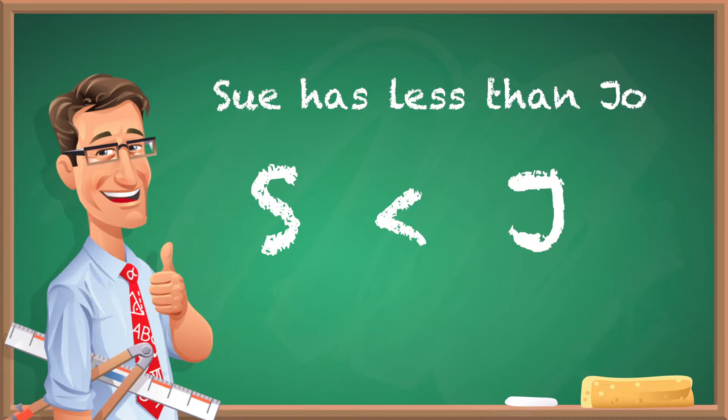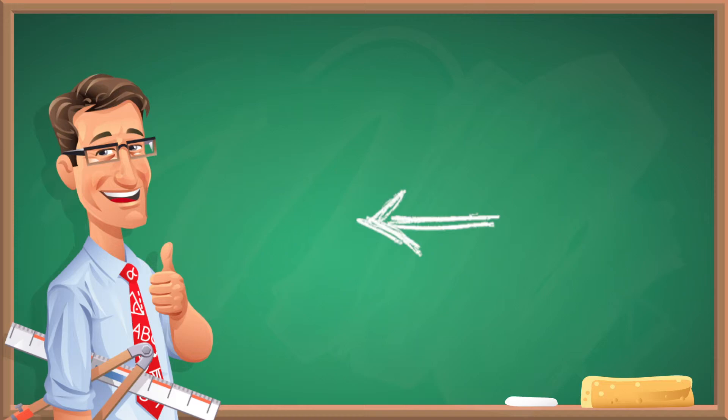What I like to look at with this is that I look at this symbol as like an arrow where the arrow will point to whatever is less than. So if you're drawing that symbol, you want to make sure that arrow points at the S.